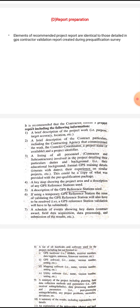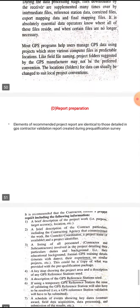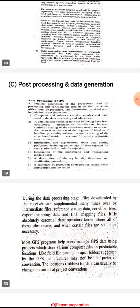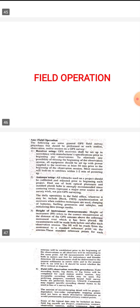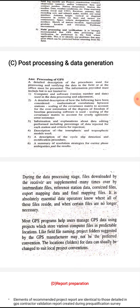This is the GPS survey report, and the phases of GPS survey are very important. Important university questions from previous exams have been provided, so kindly go through them. In university exams, they have asked to explain the phases of GPS survey, field operation, post-processing and data generation, and report preparation — each phase for about 5 or 6 marks, so study this thoroughly.